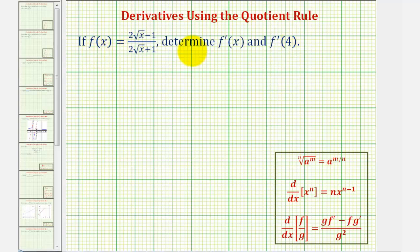We're given f of x and asked to find f prime of x and f prime of four. Notice the given function f of x is a quotient, so to find the derivative function, we will have to apply the quotient rule stated here below.